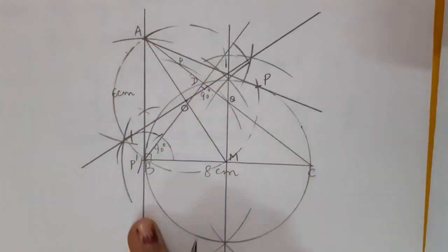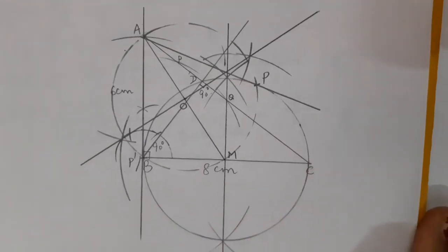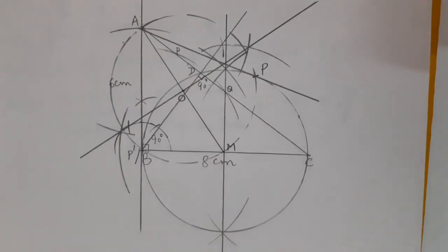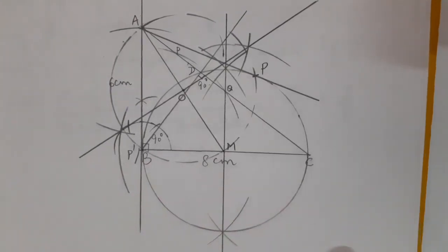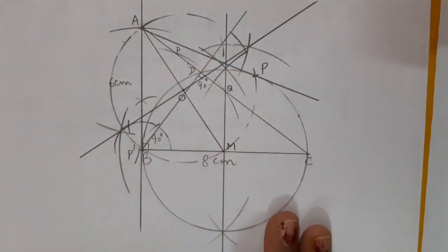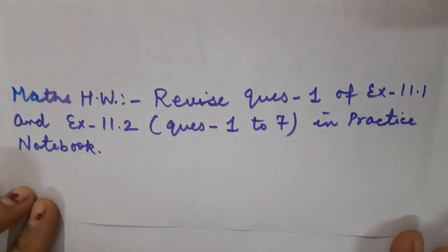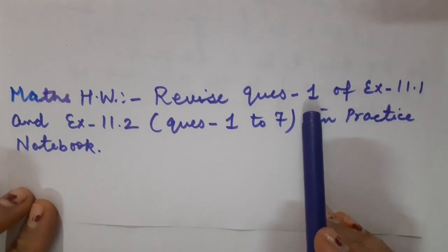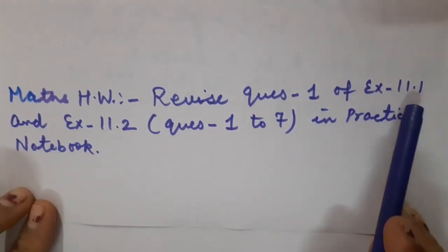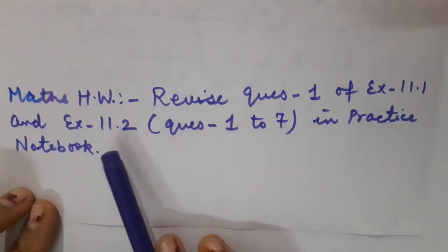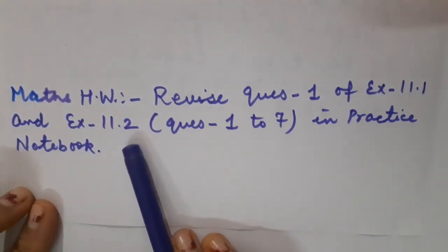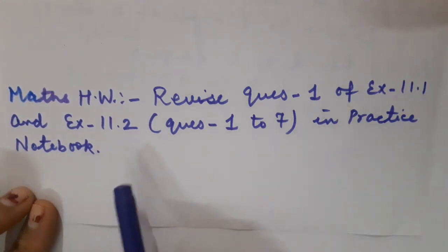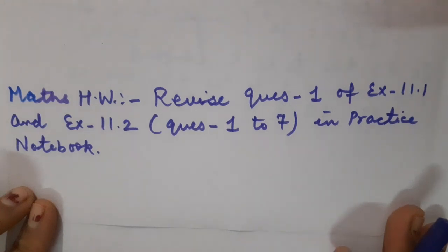To draw tangents from external point A to the circle: join A to center M. Draw the perpendicular bisector of AM to get a new center point O. Taking O as center with radius AO or OM, draw a dotted circle which intersects the given circle at points P and P' (coinciding with B). Draw tangents AP and AP' from point A. These are the two tangents drawn to the given circle. Follow all the steps carefully as taught and you will definitely be able to construct this diagram. Homework: Revised Question 1 of Exercise 11.1 on division of a line segment, and all 7 questions of Exercise 11.2 on constructing tangents.